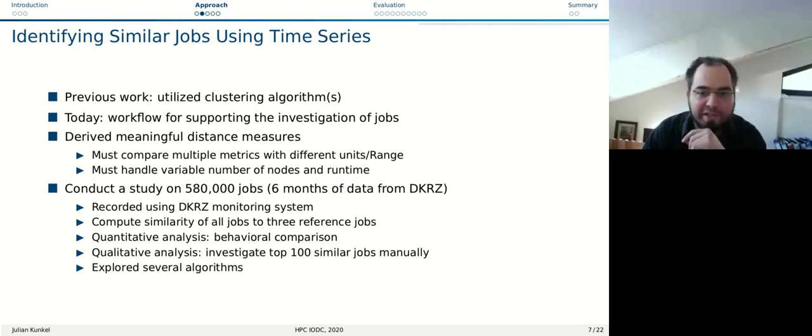What we did as part of this work, published in the incubator JHPS and in a shorter version in LNCS, is we tried to identify similar jobs looking at this time series of 10 second grouped intervals. We spent quite some time over the years looking at clustering algorithms. As part of this specific work, we were interested to establish a workflow for supporting this investigation of jobs. We looked into meaningful distance measures, must handle variable number of nodes and different lengths of jobs, and conducted a study of about 600,000 jobs, which is six months of data from DKRZ.